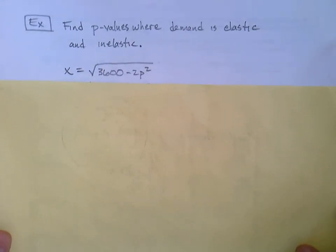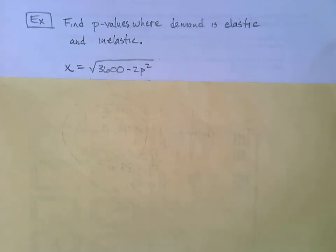There's another type of problem I want to talk about here in the lecture, where they're not simply asking is it elastic, inelastic, or unit elastic. Maybe we'd want to go a little bit further like this: find the p-values where the demand is elastic and inelastic. So we're not setting a price point. We're saying what prices would cause it to be elastic and what p-values would cause it to be inelastic. At the same time, we'll be able to figure out what p-value would make it unit elastic, which is really the ideal. So here the price-demand function is x equals the square root of 3600 minus 2p squared.